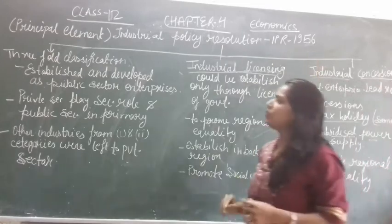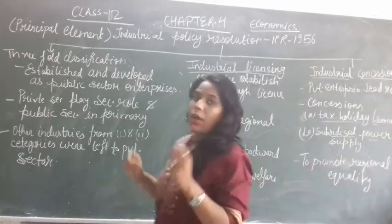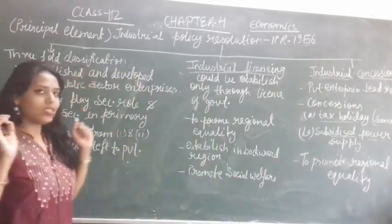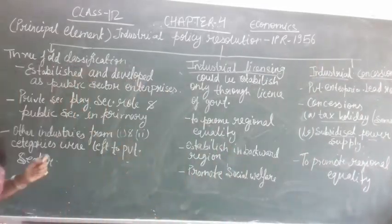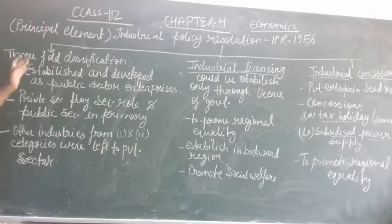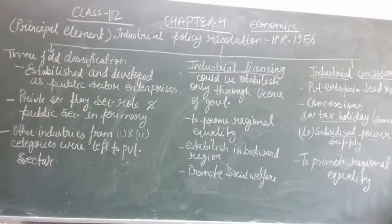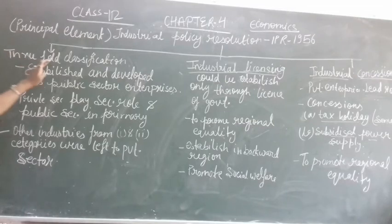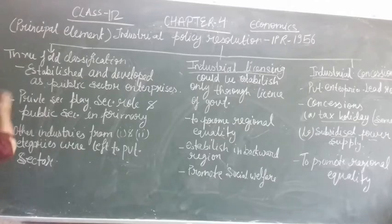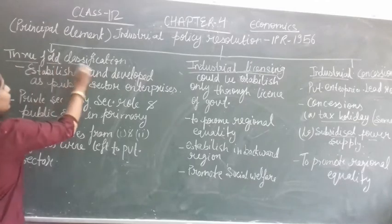So in the year 1956, the Principal Elements were set for the industries. Now we can see what those Principal Elements were. First of all, we have a three-fold classification — the industries were classified in three parts.